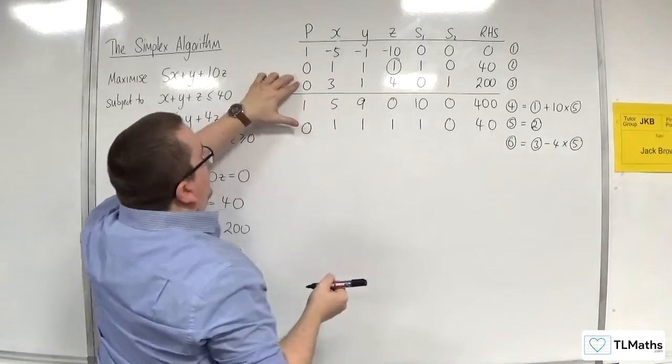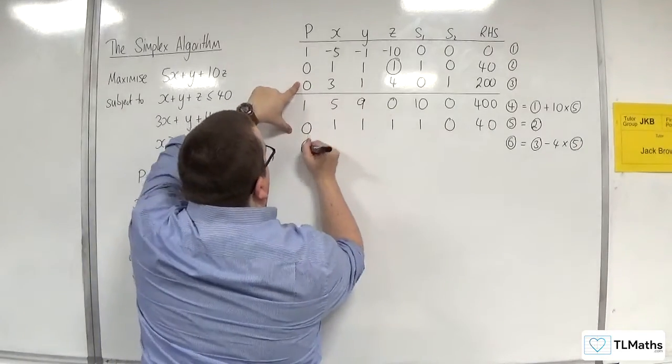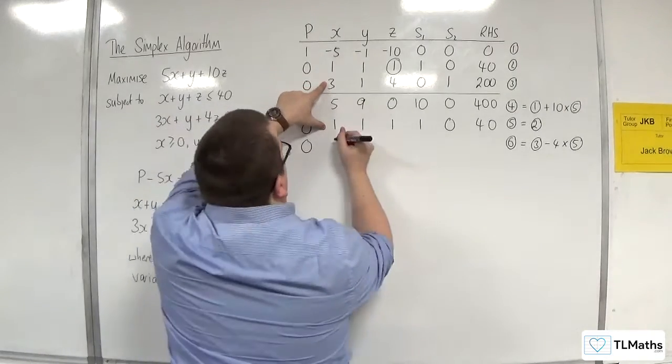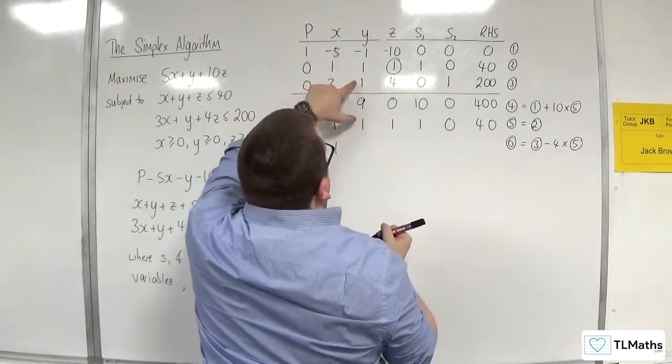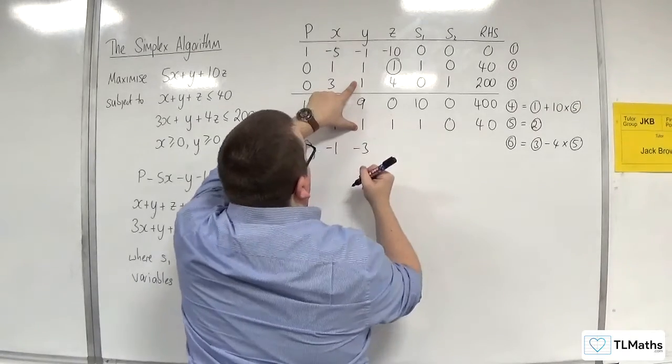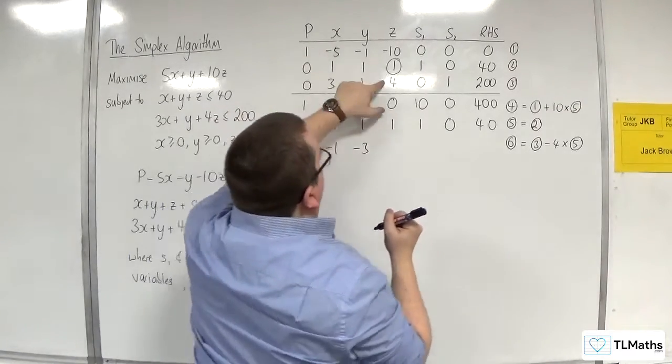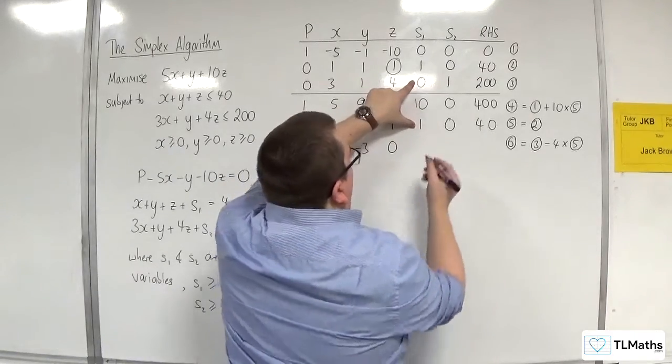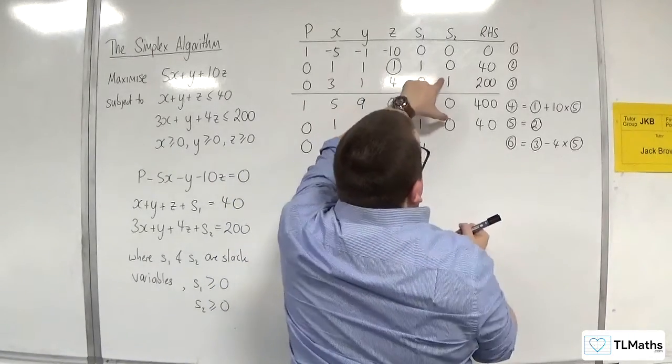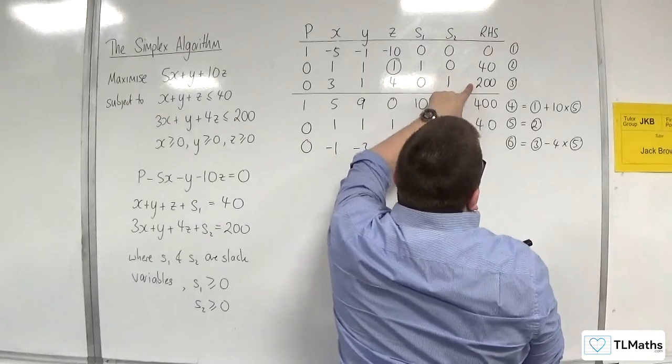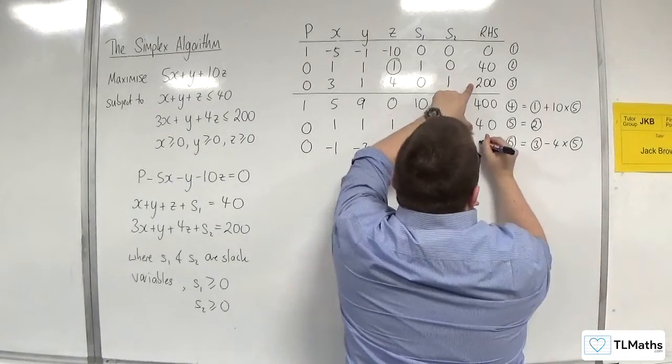So 0, take away 4 lots of 0. 3, take away 4 lots of 1 is going to be minus 1. 1, take away 4 lots of 1 will be minus 3. Then we're going to have 4, take away 4 lots of 1 is 0. 0, take away 4 lots of 1 is minus 4. 1, take away 4 lots of 0 is 1. 200, take away 4 lots of 40 will get me 40.